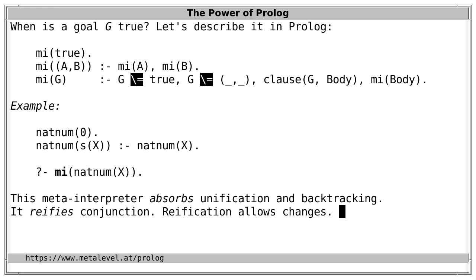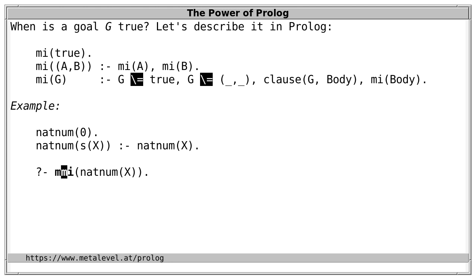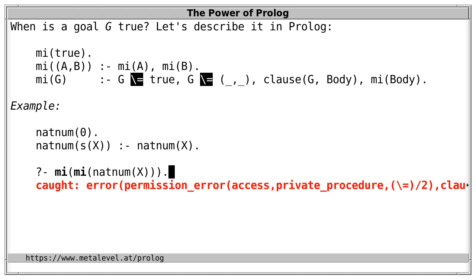Another thing we note about this meta-interpreter is that it's not metacircular — it can't interpret its own definition. For example, if we add an additional layer of meta-interpretation, asking the meta-interpreter to interpret its own code as it interprets the goal natNum(X), then we get a permission error. Because this meta-interpreter doesn't know anything specific about the 'not unifiable' predicate used in its definition, so it tries to access the definition of this built-in using 'clause', and that doesn't work.